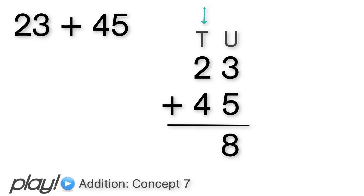2 tens plus 4 tens gives us 6 tens, which stays in the tens column. Therefore, our answer is the same as before and we get 68.